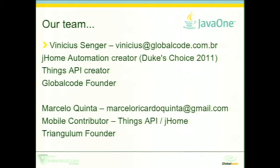I'm Marcelo Quinta, I'm from Brazil too. I'm one of the mobile contributors to the Things API. I have a master's degree in computer science. I am a mobile developer since 2007. I'm the Triangle founder, a company that builds mobile apps for iOS, Android, Java ME, and BlackBerry — this kind of platform.